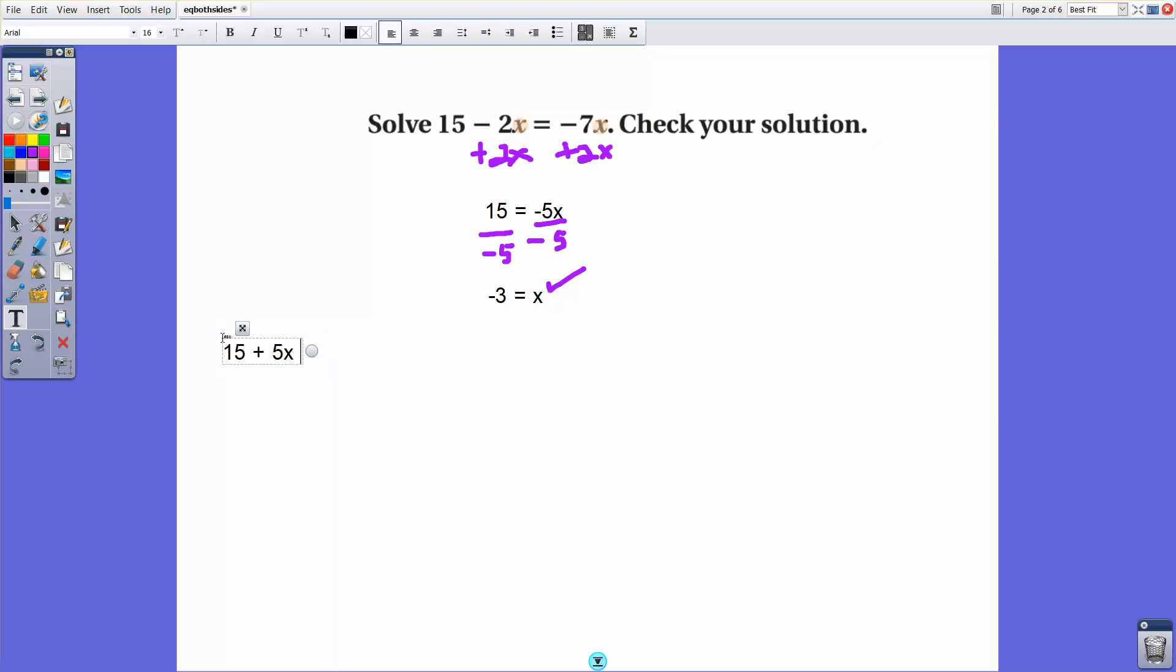Just to show you what would happen if you were to add 7x instead, you would end up with 15 plus 5x equals 0. And that is a little bit more difficult equation to work with because you have to do an extra step. Although it's not a hard step, it's an extra step. You'd have to subtract 15 and then divide by 5. And you'd still get x equals negative 3, but it would just take you one extra step to do it.